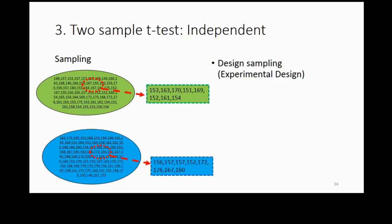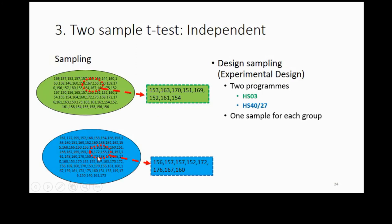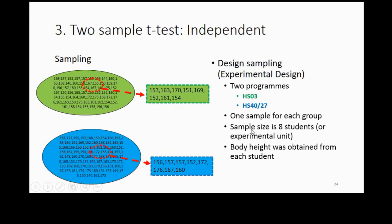Now let's talk about experimental design. Starting from now, for every statistical test we will discuss the experimental design. In this case we are discussing how we sample from the population. We have two programs — those are the two groups — and we take one sample for each group. You need to mention your sample size, and in an observation or experiment you also need to mention your response variable, which here is body height measured from each student.